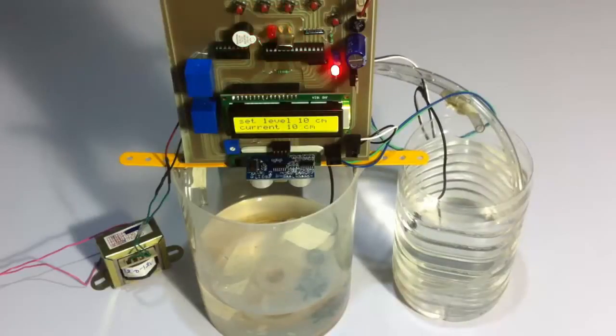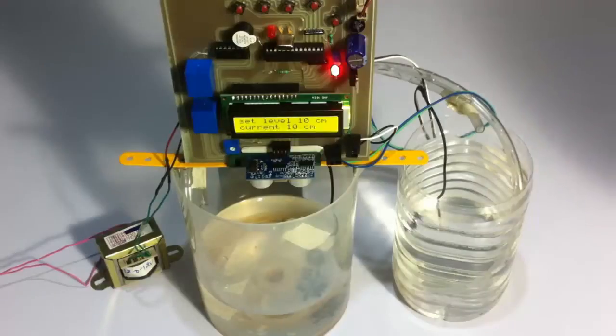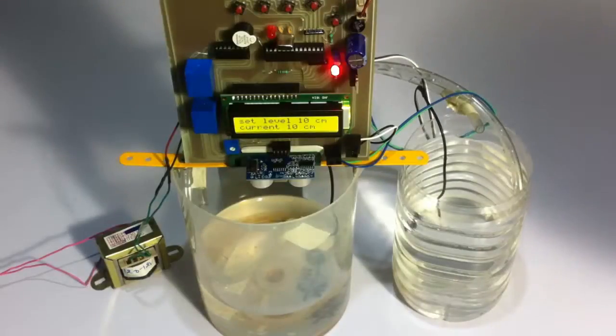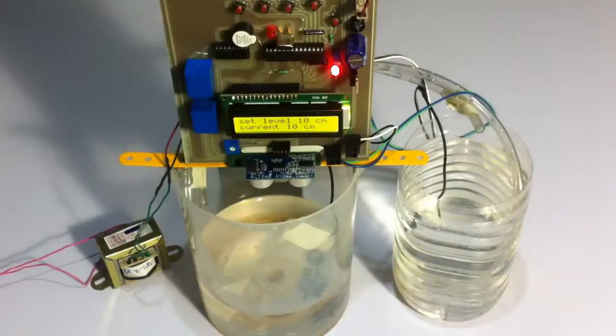Now as soon as the water level has reached 10 centimeter height from the sensor, it has stopped the water supply and it's showing that the limit has been reached, the desired water height has been reached. This is how the project works. Thank you.